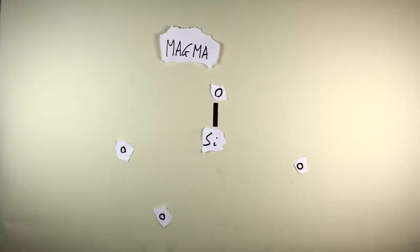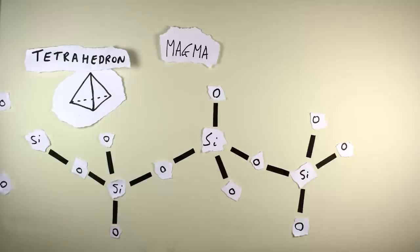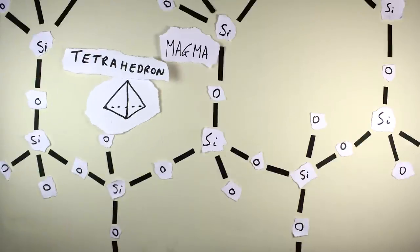Silicon and oxygen form a tetrahedral structure, with oxygen atoms acting as bridges between these silicon atoms. Here, silicon acts as network former.